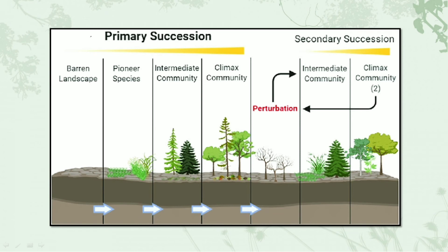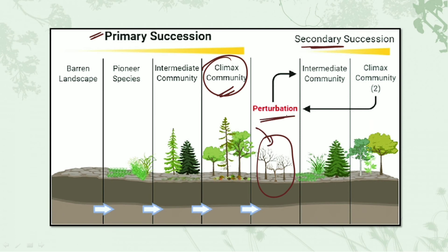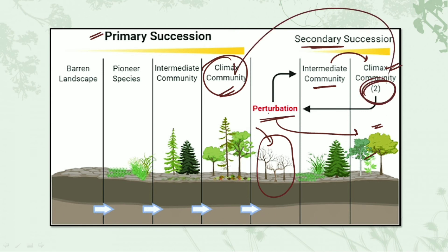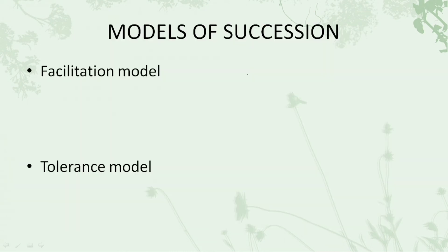In secondary succession, we begin from where primary succession reached its climax community. Because of some disturbance or natural calamity, there occurs perturbation — meaning destruction. After the perturbation, succession starts again. We would again have an intermediate community and finally the climax community, which would be the secondary one, because a climax community had previously existed there.